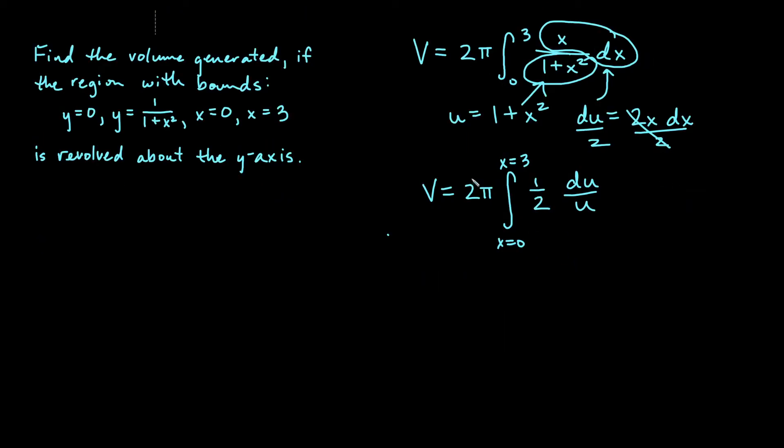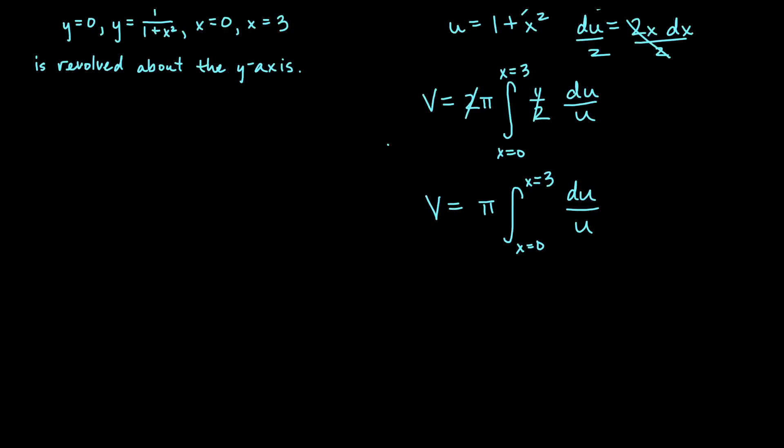I will bring out the one-half to reduce with the 2. So I'll just have π out here, and then I will have the integral x equals 0 to x equals 3 of du over u. Hopefully we can see this is a log rule, natural log.